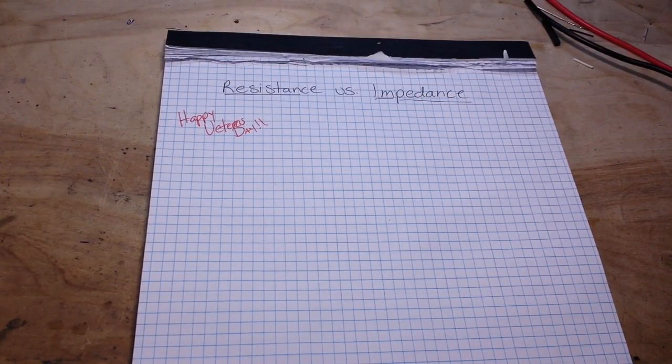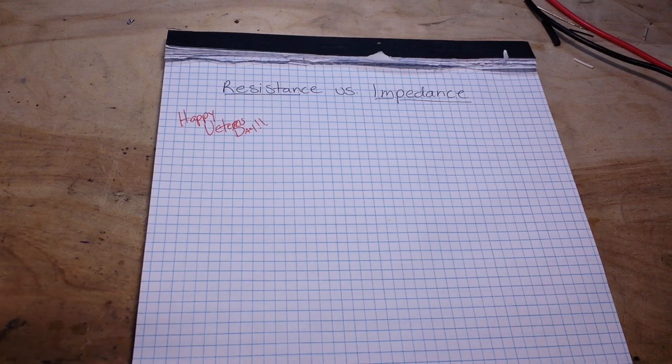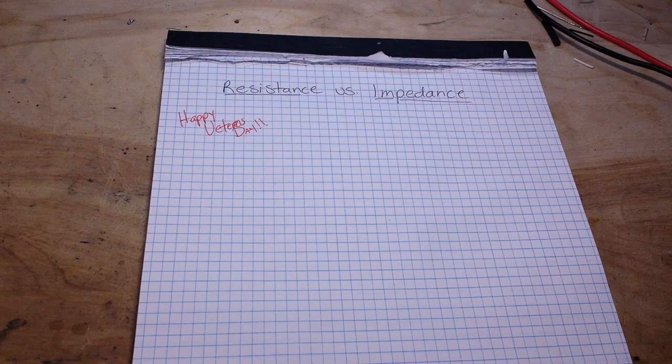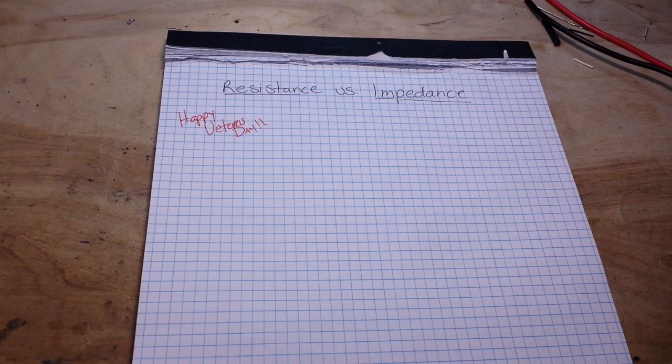Hey, what's happening guys? Today we're going to talk about the differences between resistance and impedance. They kind of refer to the same thing, which is simply an opposition to the flow of current through a conductor. But resistance is for DC, and impedance is for AC.